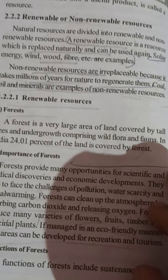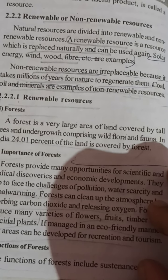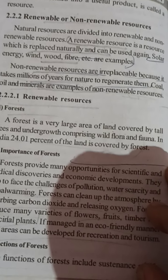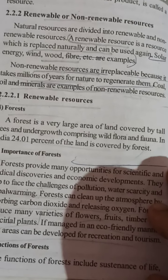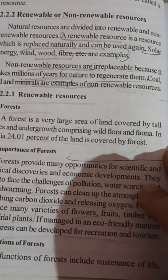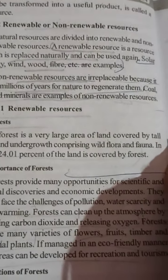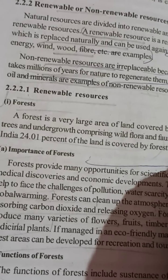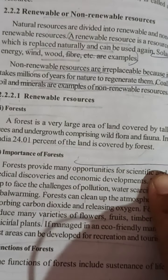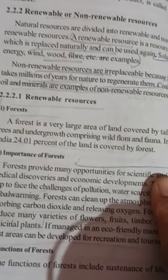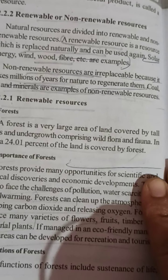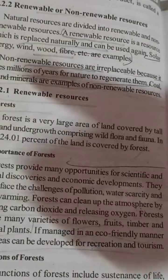Non-renewable resources are irreplaceable because it takes millions of years for nature to regenerate them. They cannot be produced according to usage and are diminishing or decreasing with use. Examples include coal, oil, and minerals. Renewable resources can be replaced naturally, but non-renewable resources cannot.